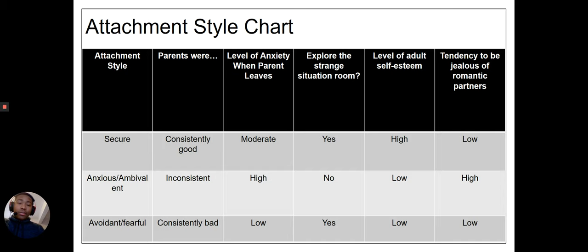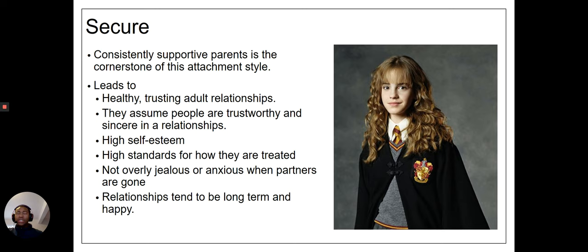The first one is a secure attachment style, which is seen as the most likely to result in happy relationships and successful, good bonding relationships — you're seeing a good, supportive parent from this. I'm going to talk about a popular cultural example: Hermione Granger as our example of a secure attachment style. Her parents were supportive but not too suffocating. She was confident, free to express her emotions, and willing to trust others.